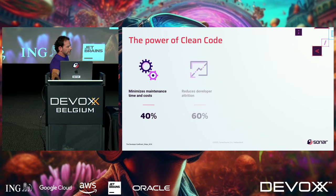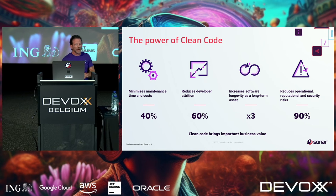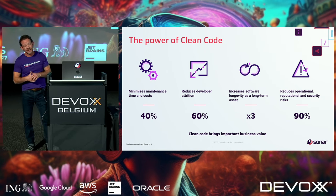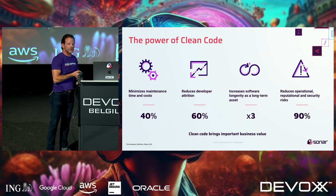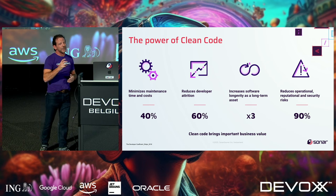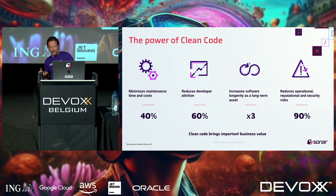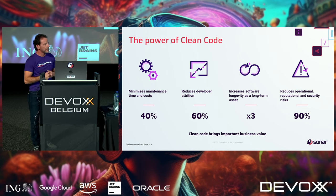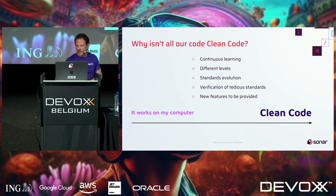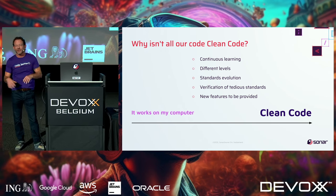So the power of clean code: it minimizes maintenance time and costs by up to 40%, reduces developer attrition by 60%, increases software longevity three times long-term, and reduces operational, reputational, and security risks up to 90%. Clean code brings tremendous value to your business. As software engineers, we control and write the code, so we have immense power in our companies. There's a great book called The New Kingmakers by RedMonk that shows how software engineers are changing the world.